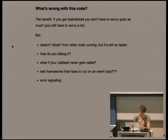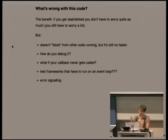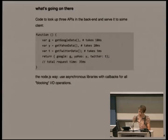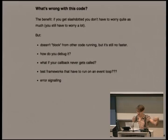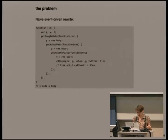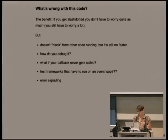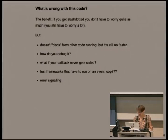What's wrong with it? The benefit is if you've got a huge volume of requests, every time you call this and yield, something else can happen. But how do you debug this? You're going to have to run a test framework which has an event loop. How do you manage that? Do you want to write those unit tests? I don't.